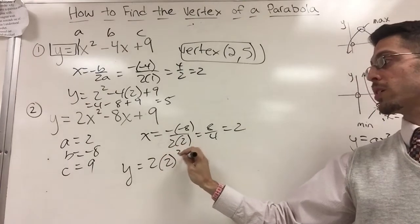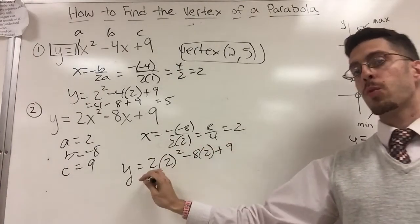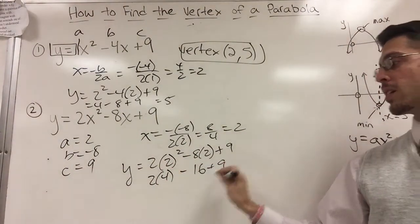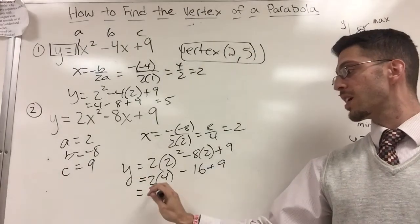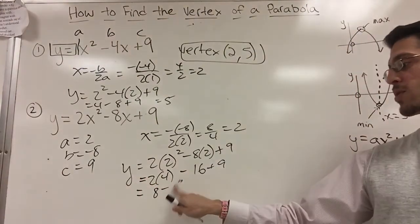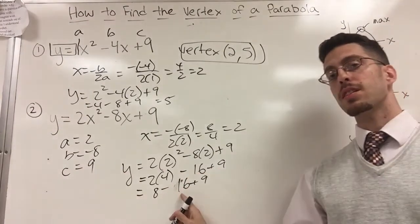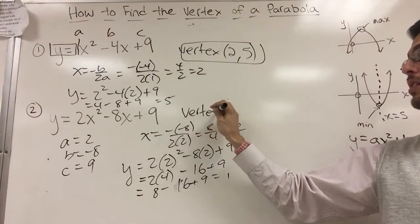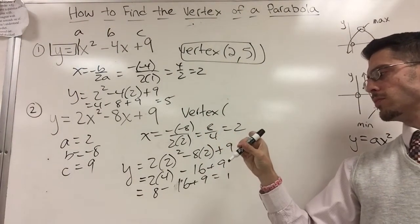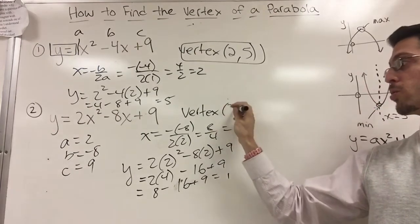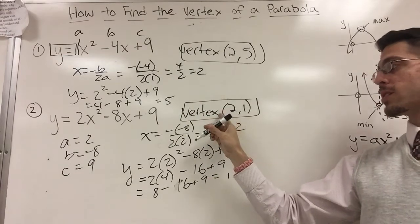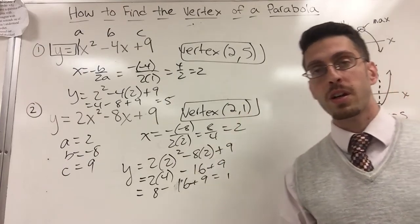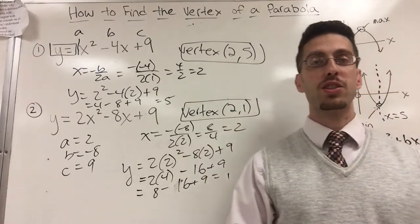That's 2 times 2 squared minus 8 times 2 plus 9, which is 2 times 4. Now I'm doing PEMDAS, exponents first. 2 times 4 minus 16 plus 9 is 8 minus 16 plus 9. 8 minus 16 is negative 8. Negative 8 plus 9 is 1. So here my vertex is 2 comma 1. 2 comma 1. And this would be, again, my maximum would be 2 comma 1. 2 million sneakers, $1 million. Alright, so that's how you find your vertex. Thanks for watching. See ya.